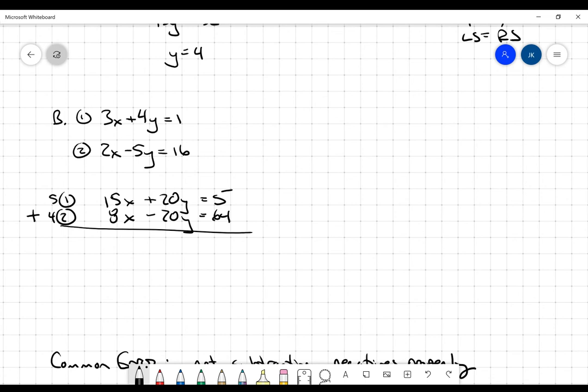So 15x plus 8x is 23x. 20 minus 20 is 0. And that's what I want. I want one of the coordinates to disappear here. And then 5 plus 64 is going to be 69 there. X is going to equal 3 when I divide.